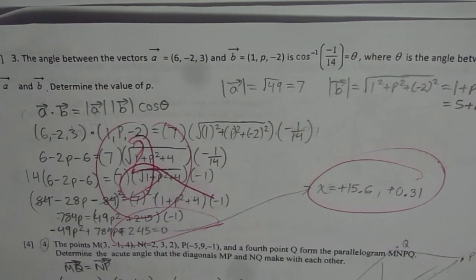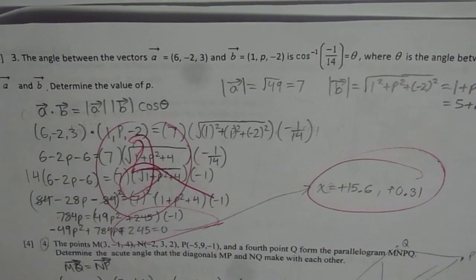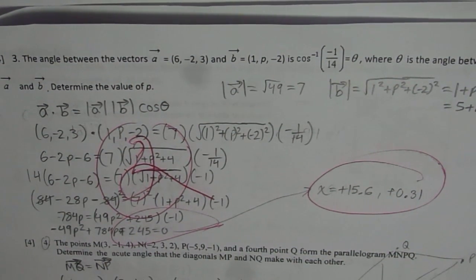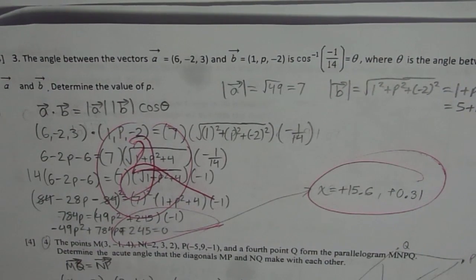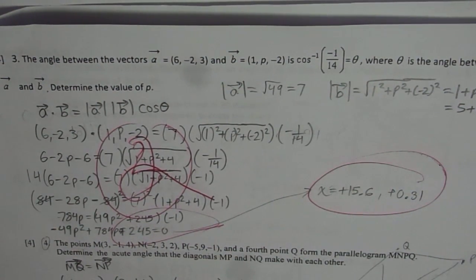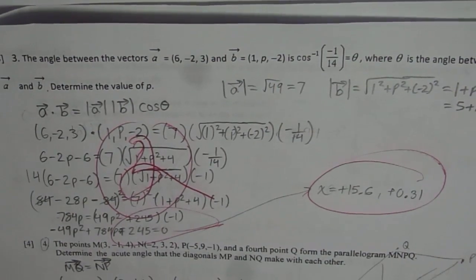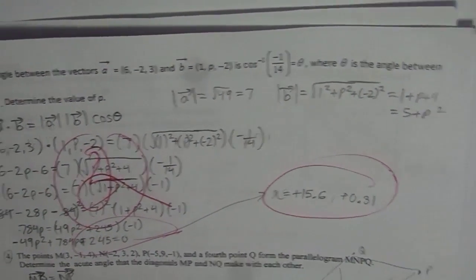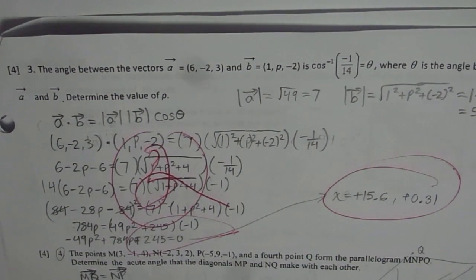I am Anil Kumar sharing with you test questions from Vectors Chapter 7. It is the application of dot and cross product of vectors. You can copy this question and then we will discuss this at length. The angle between vectors A which is (6, -2, 3) and B which is (1, p, -2) is cos inverse of -1/14 equals theta, where theta is the angle between A and B. Determine the value of p.